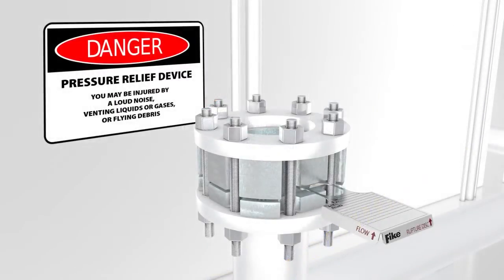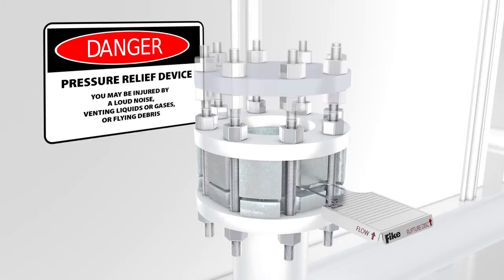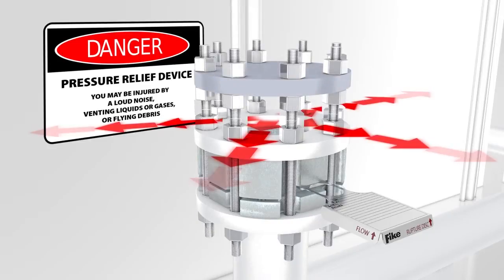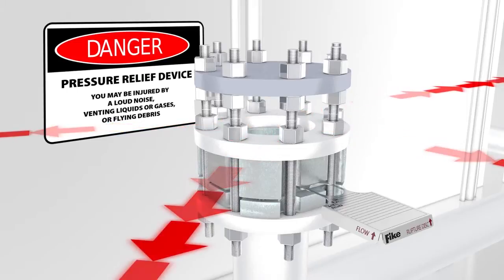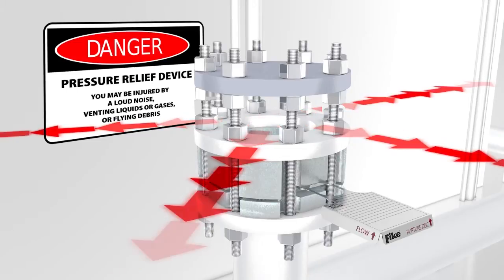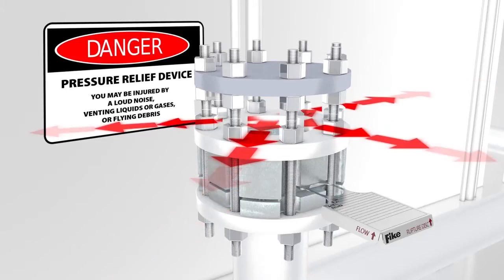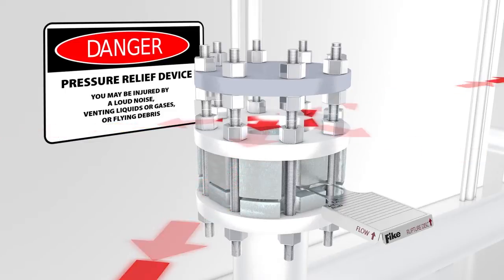Baffle plates used on the end of outlet piping will redirect but not eliminate potentially dangerous system discharge. The piping near the rupture disc assembly should be braced to absorb shock caused by the opening of a rupture disc.